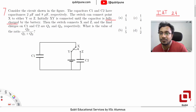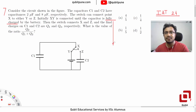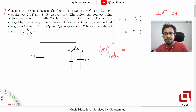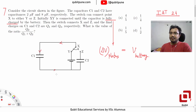What should be the approach in solving this problem? First of all, we will try to understand the meaning of the word FULLY CHARGED. Can anyone explain that? FULLY CHARGED means the potential difference between the plates of the capacitor is equal to the potential difference of the battery. And FULLY CHARGED means there is no current that is flowing.